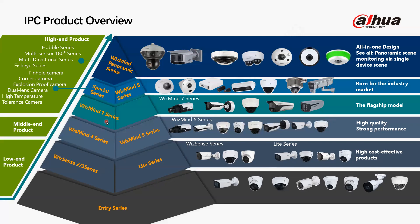From WizMind 7, WizMind 8, and special series including the WizMind Panoramic series, these are the high-end products. They have more AI functions and higher-tier algorithms compared to WizMind 4 and 5. These are project-based products, slightly more expensive, and can accommodate different vertical markets for such projects.